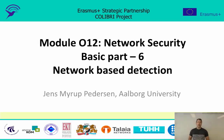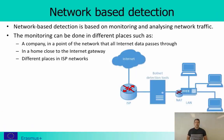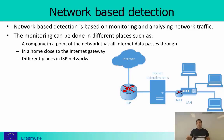Welcome to part 6 of the basic module in network security. Here we will be talking about network-based detection of malware and botnet activities. Network-based detection can be done at different points in the network, as long as traffic passes through that point. In a company this could be where all traffic goes to the internet, or on the internal network. In a home it could be close to the internet gateway, or even in ISP networks if we are able to handle that large amount of data.